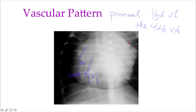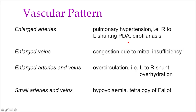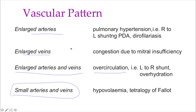When vessels are small, we don't have a specific measurement, but the whole lung looks too dark and the vessels look almost like lines. If only the arteries are big, we think pulmonary hypertension — such as right-to-left shunt, PDA, or dirophilaria. If only the veins are enlarged, we think congestion, especially due to mitral insufficiency. If both arteries and veins are big, we consider over-circulation — a left-to-right shunt or over-hydration. When they are small, consider hypovolemia, shock, or tetralogy of Fallot.